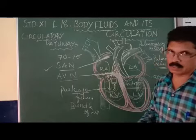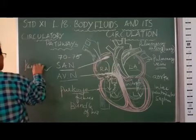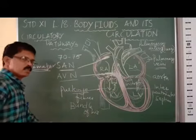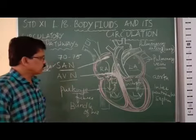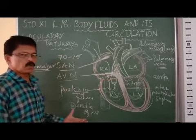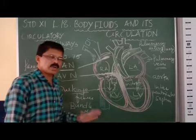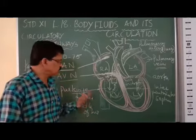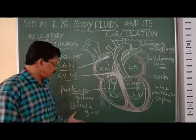The pacemaker generates action potential. So the SA Node is called the pacemaker of the heart. You should know this very clearly: what is the SA Node, where is the pacemaker, what is the AV Node, where is the AV Node. From the AV Node, the nodal bundles come over and divide into fine fibers, spreading around the right and left ventricles — these are called the Purkinje fibers. The bundles coming from the AV Node are called the Bundle of His.